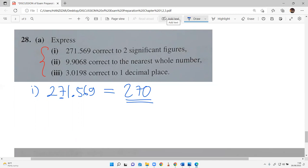Now part 2: 9.9068 correct to nearest whole number. Whole number is at the front, before the decimal. 9.9068, this is the whole number. Does it increase? Yes, because of the 9, it becomes 10. 9 is special. Remember, 9 is a special number because 9 can increase the left number, the number that is on the left. If it is 9, round up.